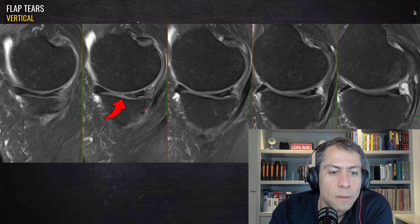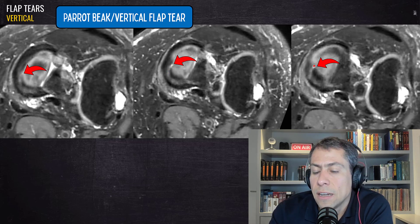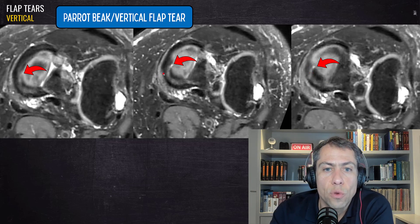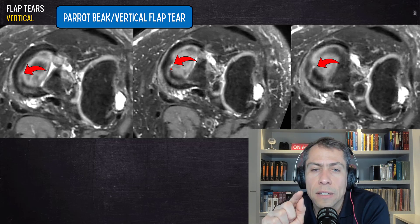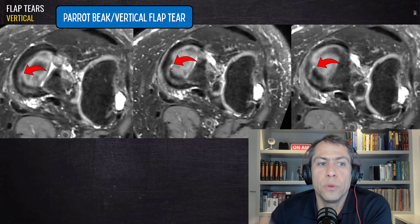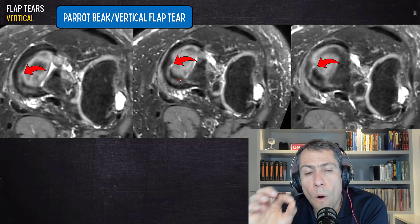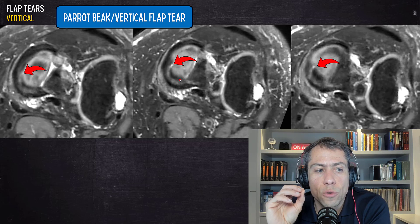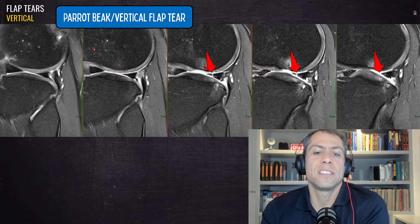In the sagittal plane it's not a good plane to find the tear that was so obvious on the coronal plane. We need to go to the axial plane, and there we can clearly see the parrot beak or vertical flap tear in this region. We acquired 3D sequences and reconstructed the images on the axial plane, which was very useful. Always double-check the axial plane to differentiate a parrot beak or vertical flap tear from a radial tear occurring at transition zones between the anterior horn and meniscal body or meniscal body and posterior horn — sometimes it's not easy.